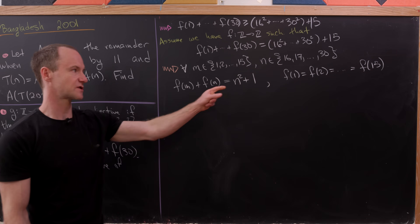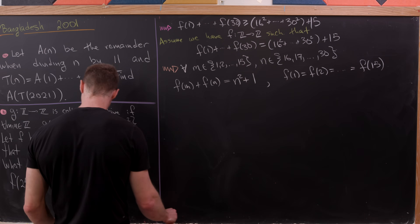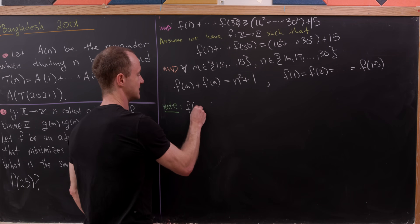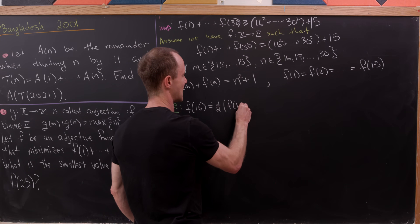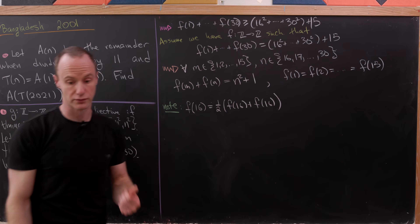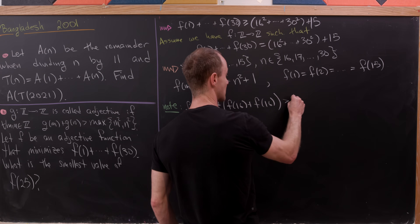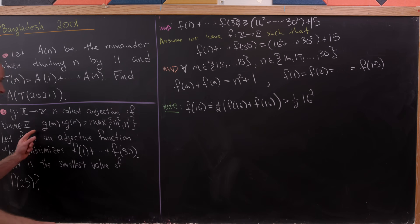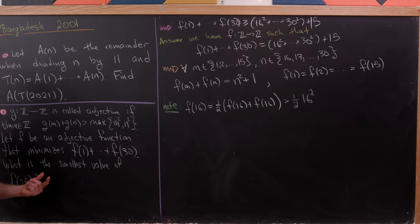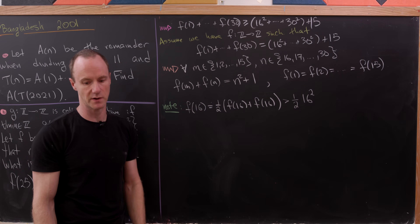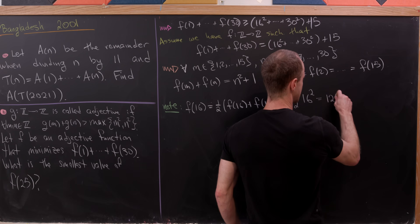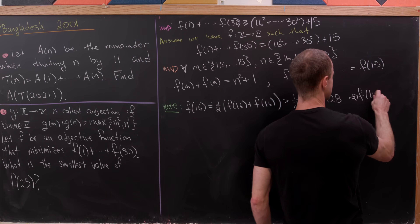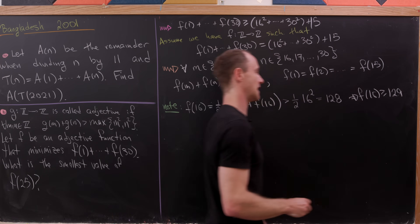Now let's look at f(16). We note f(16) = ½ · [f(16) + f(16)] > ½ · 16² = 128, using our adjective inequality applied to m = n = 16, which gives f(16) + f(16) > max(16², 16²) = 16². Since we're over the integers, f(16) ≥ 129.